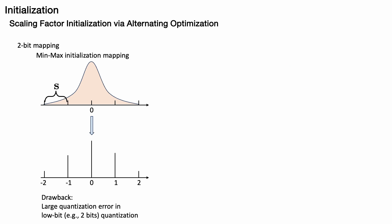The third strategy involves scaling factor initialization through alternating optimization. Previously, many approaches employed min-max quantization initialization to retain the largest and smallest values in the model. While this method preserves weight outliers, it tends to increase quantization errors, particularly in 1- or 2-bit settings.